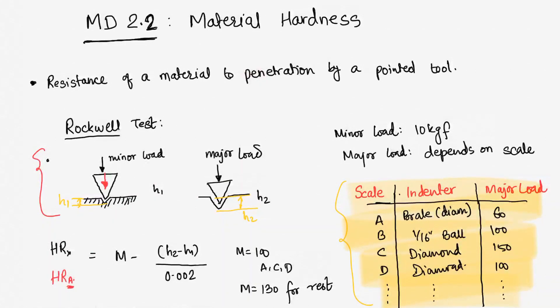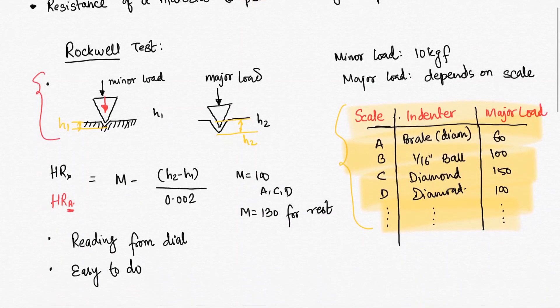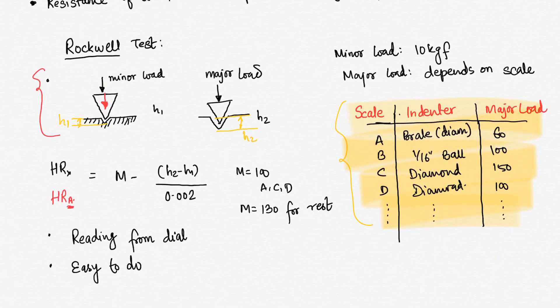Now you have to remember one thing - formulas are not at all important. Just what is the concept of how do we do the test, that is only important. This is a very easy test to conduct, Rockwell test. The readings are taken directly from the dial. The H1 and H2 values will be taken from the dial. And since it is very easy, this is a very preferred type of test. Rockwell test we use quite frequently.